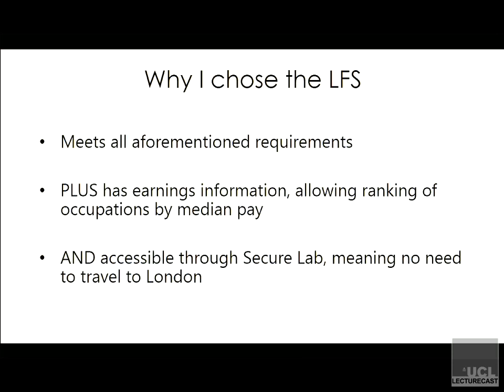I chose to use the LFS for the other part — the local level data about polarization — because it also meets all the requirements: relatively large sample size and so on, especially because you can pool data for multiple years. Unlike the LS, it also has earnings information, which was important because I wanted to look at the wages associated with occupation in order to construct my measure of polarization. A big plus is that you can access it through the secure lab, which is the online secure system that you can use wherever you are. You just need to get it set up, which does take a long time, but then you can use it wherever you're working, which is more convenient than travelling to London.